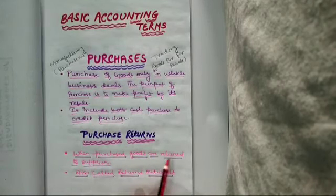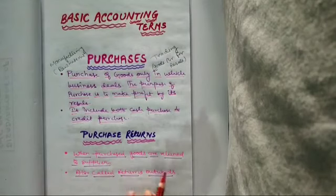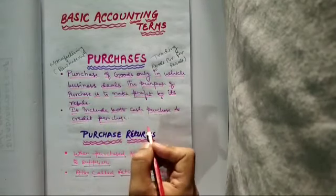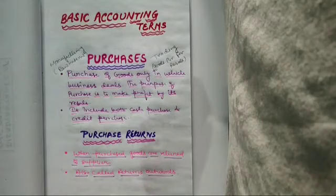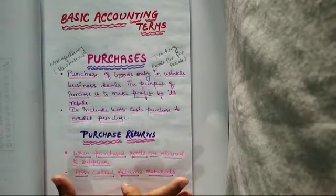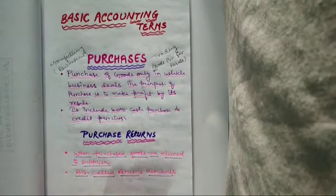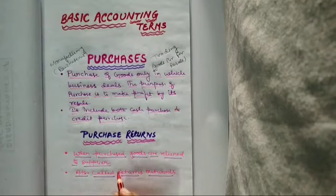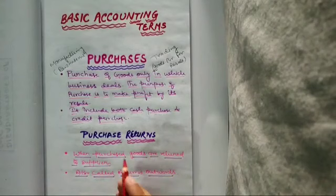So when purchase goods are returned to the supplier जब हमने जो goods यहां purchase किये, अगर हम किसी ही reason की वज़ा से वो goods उसको return कर रहे हैं. वो सक्ता जो हमने order दिया था वो उसके according ना आया हो यह हो सक्ता है कि उसमें कुछ breakage हो गया or defect हो गई हो तो हम किसी भी reason की वज़ा से जब supplier को goods जो हमने purchase किये वो return कर रहे हैं.